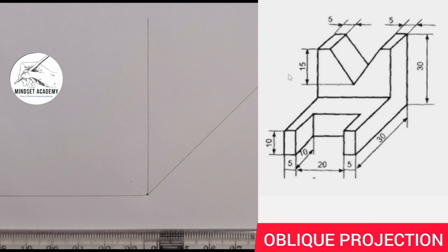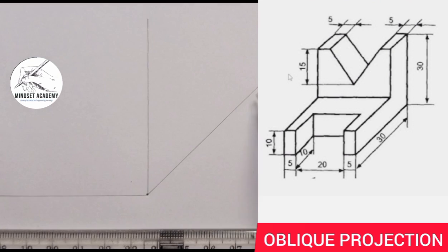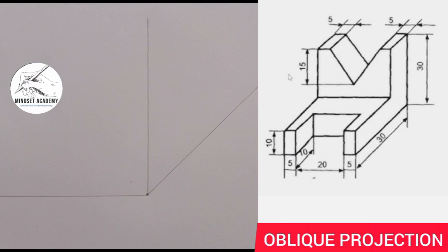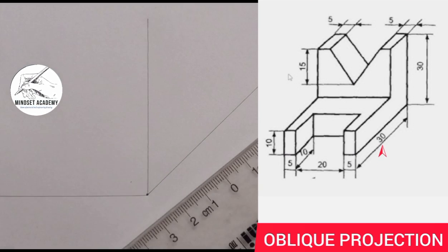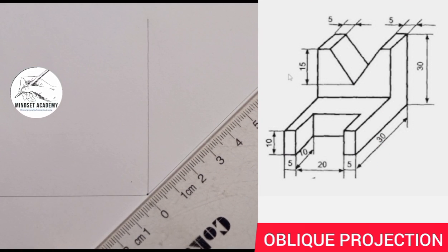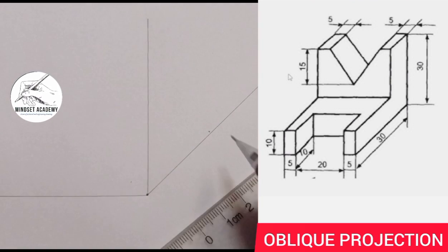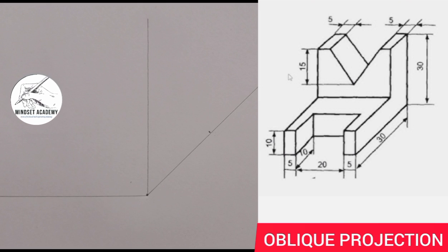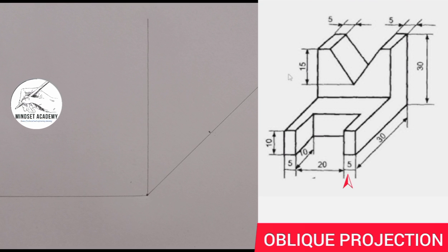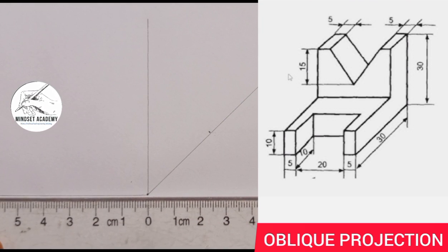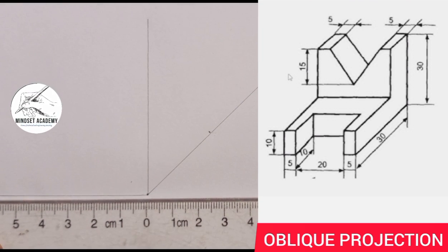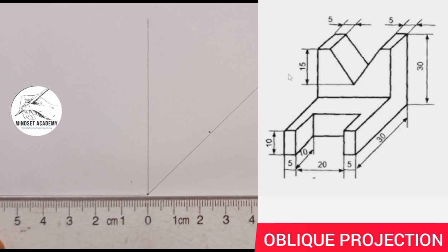There are two things you need to put into consideration. The length here, as you can see when my arrow is pointing, is 30, so I will measure 30. Now the length here, as you can see, is given as 20 plus 5 plus 5, that is 30 also. So the length here is 30, and from this point I am going to measure 30.